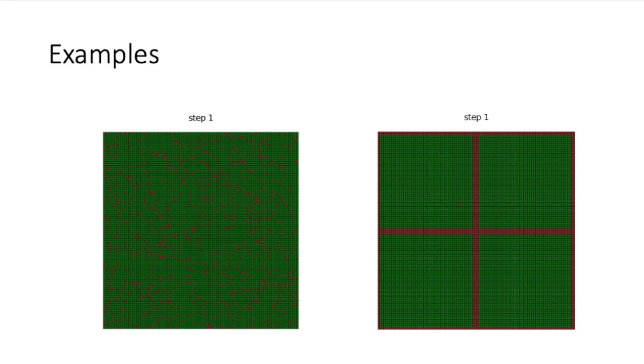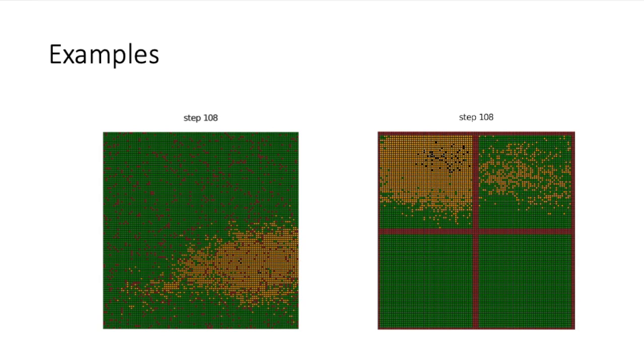Here are two examples of runs of the model. On the left-hand side, you can see a random spatial configuration for the shade trees. And on the right-hand side, you can see a configuration that creates four subplots within the coffee farm. And as you can see, there is an indication that the spatial configuration, in this case the creation of these subplots, does have an effect on the spread of the disease.